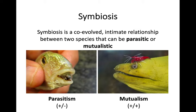Symbiosis itself is a co-evolved relationship between two species. Co-evolved means that it has evolved alongside each other for an extremely long time on the whole. There are two different forms of this symbiotic relationship, two forms of these relationships that are very closely together.